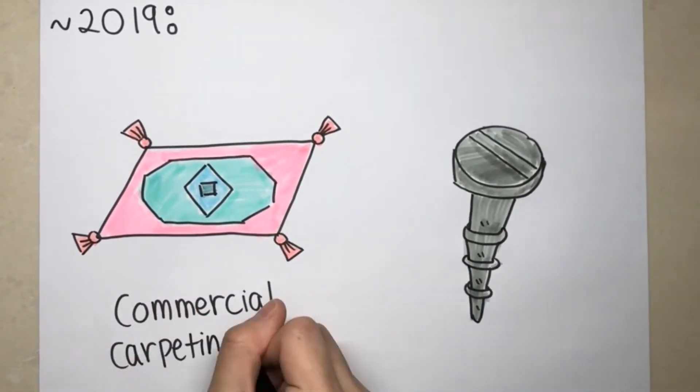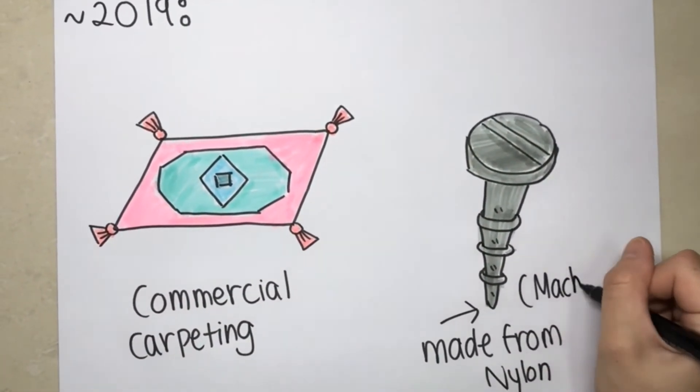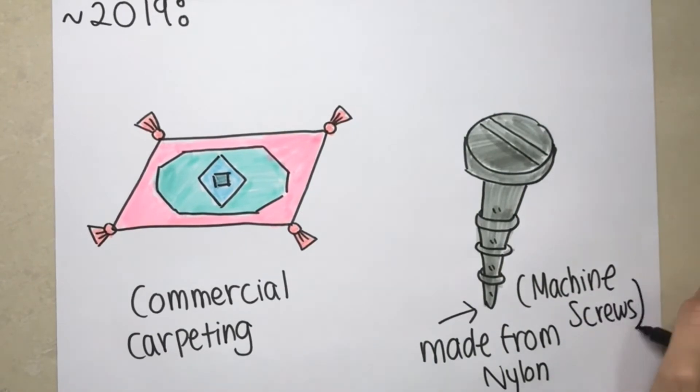Nylon in its solid form is also used to make machine screws, gears and machinery components that were previously cast in metal.